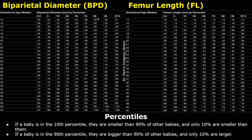These are tables showing fetal biparietal diameter and femur length. If a measurement of BPD is 53 millimeters in a fetus of 22 weeks gestation, then according to this table it is in the 50th percentile. It means that the measurement is right in the middle — it is bigger than 50 percent of babies but smaller than the other 50 percent.